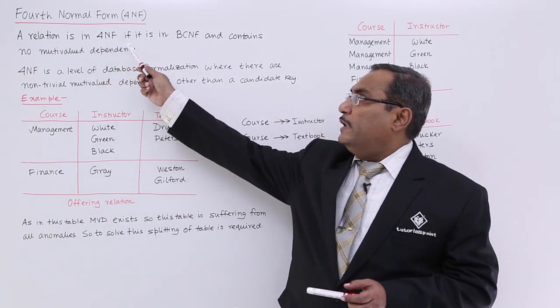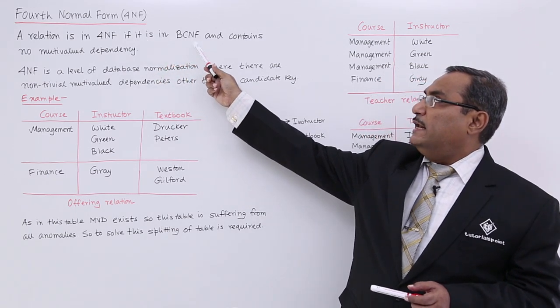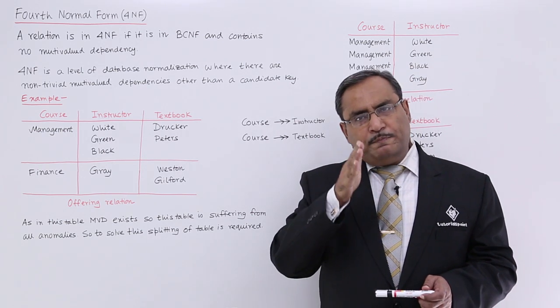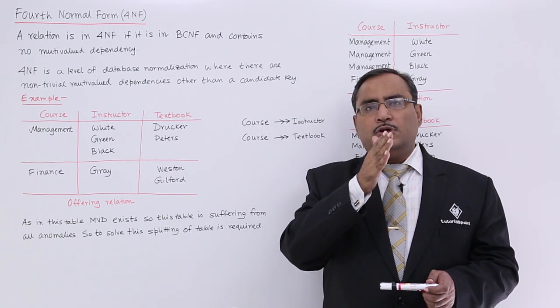A relation is in 4NF if it is in BCNF and contains no multivalued dependency. After BCNF, starting from 2NF, we had functional dependency.